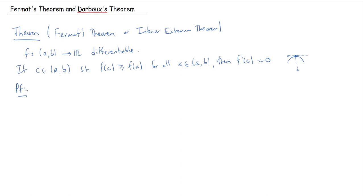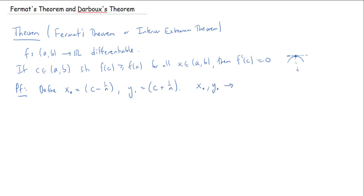To prove this, I want to define a couple of sequences that converge to C. We'll define x_n to be the sequence C − 1/n, which converges to C from the left. For n large enough, C − 1/n will be inside the interval (a, b) because C is an interior point. Then y_n = C + 1/n converges to C from the right. So both x_n and y_n converge to C.